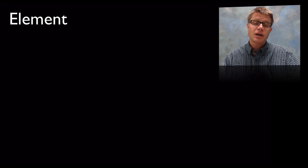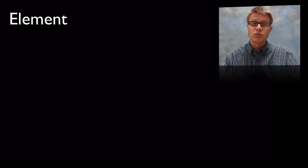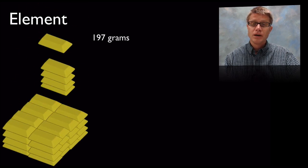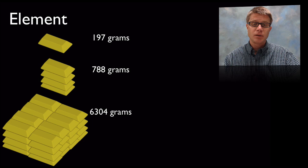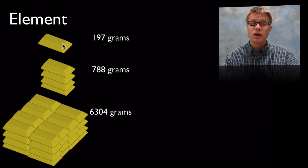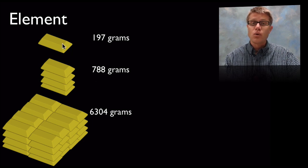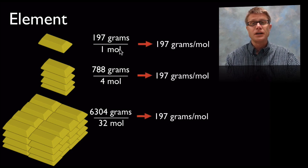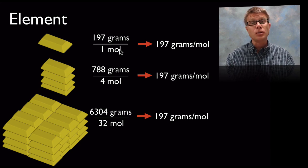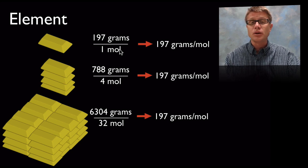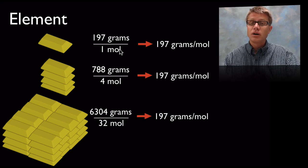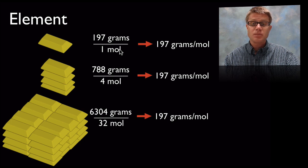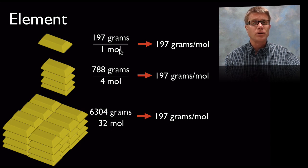Now when we're working with chemistry we don't deal with bricks. What we're going to work with is something called a mole. And so let me use gold as an example. Let's say I had 1 mole of gold or 4 or 32. It's all going to be the same mass. And what is a mole? I'll talk more about that in the next video. It's essentially a usable amount of an element, a usable amount of a compound. And so all of these are going to have the same average mass, 197 grams per mole.